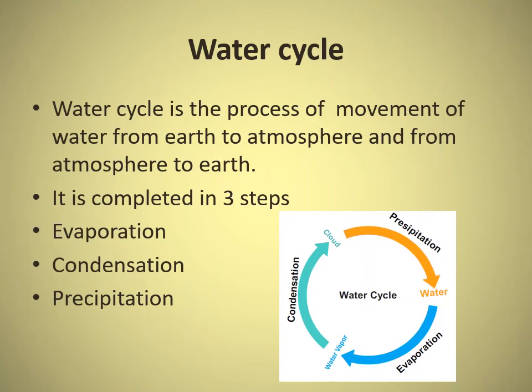Water cycle is the process of movement of water from earth to atmosphere and from atmosphere to earth. It is completed in three steps: evaporation, condensation, and precipitation.